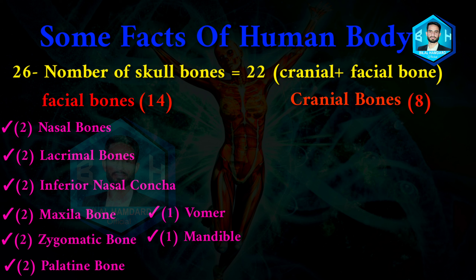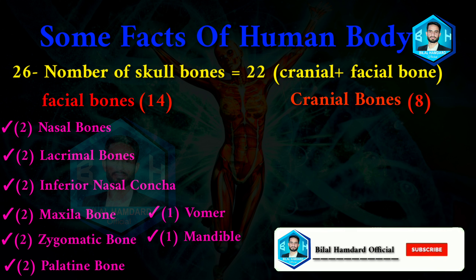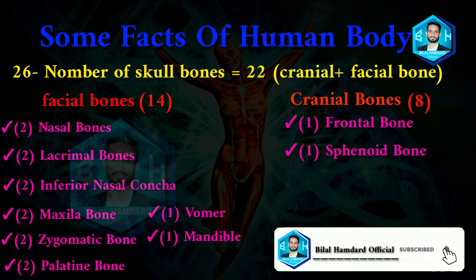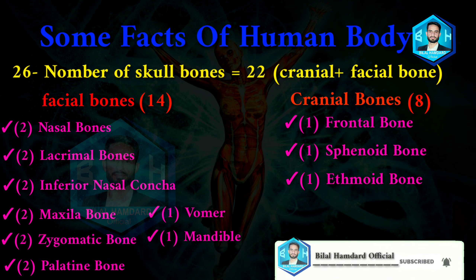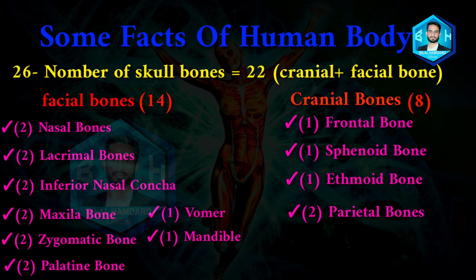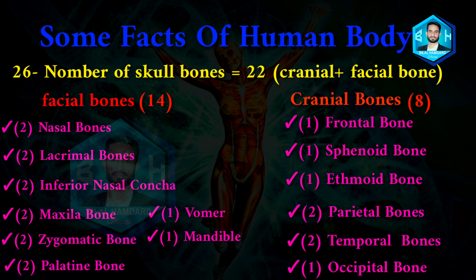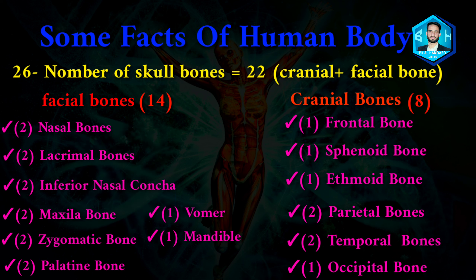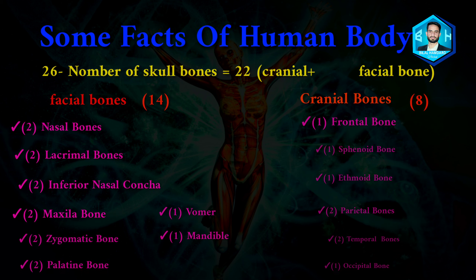The cranial bones (8) include: 1 frontal bone, 1 sphenoid bone, 1 ethmoid bone, 2 parietal bones, 2 temporal bones, and 1 occipital bone.